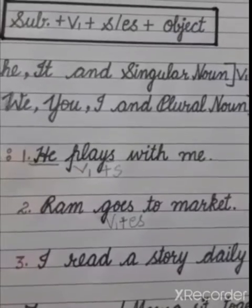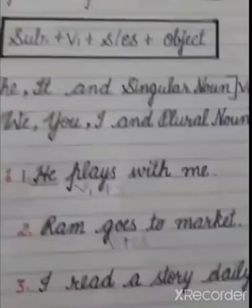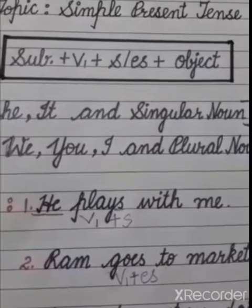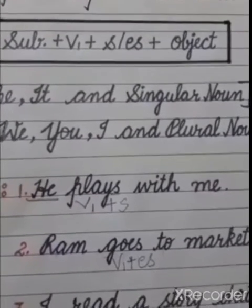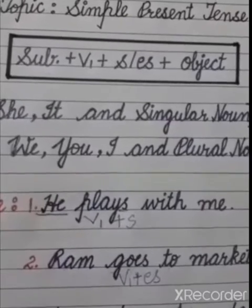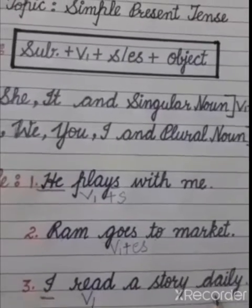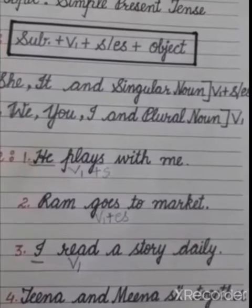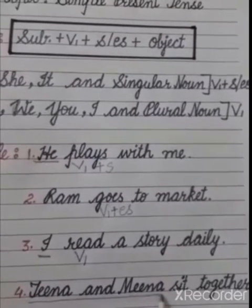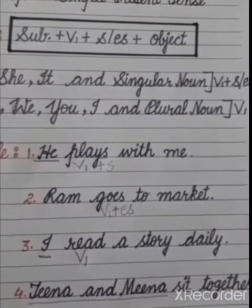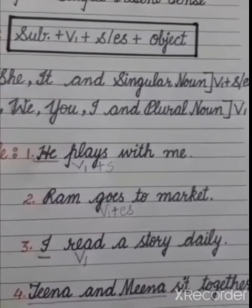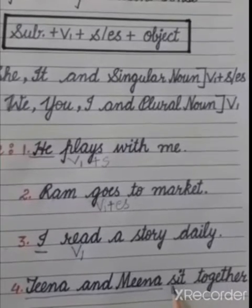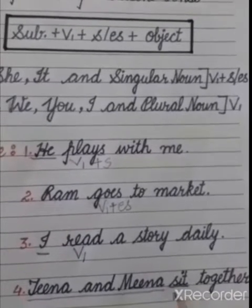Third example: I read a story daily. In this sentence, our subject is I, and with I, we don't use S or ES with the first form of the verb. Our verb is simply read. Fourth example: Tina and Mina sit together. In this sentence, there are names of two persons, so this is a plural noun. Therefore, we have not used S or ES with the first form of the verb.